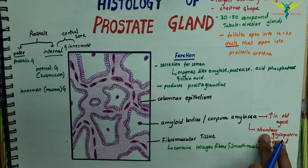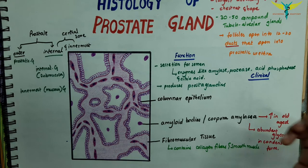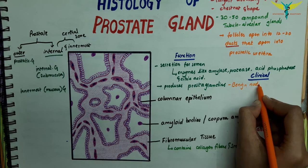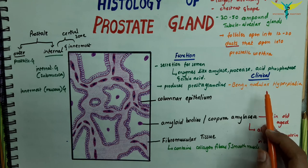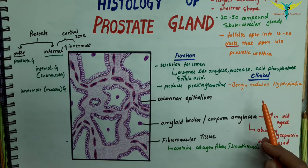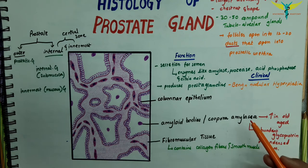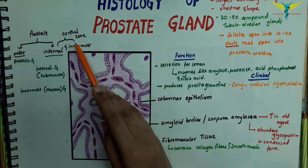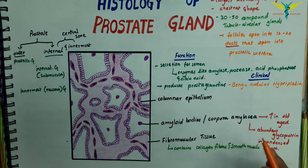Regarding clinical correlations: benign nodular hyperplasia of the prostate is a non-neoplastic tumour-like enlargement of the prostate and is a very common condition in men. It becomes increasingly more frequent above the age of 50 years, with incidence approaching 75–80% in men above 80 years. The central zone commonly undergoes benign hypertrophy in older persons, and enlargement can compress the urethra, leading to difficulty passing urine.